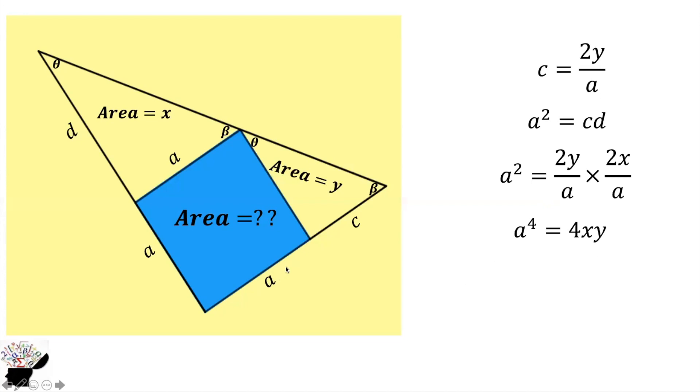We are going to get a squared equals the square root of 4xy. Now square root of 4 is 2, so we get a squared equals 2 square root of xy. So the area of the square is 2 square root of xy. I hope you got it correct.